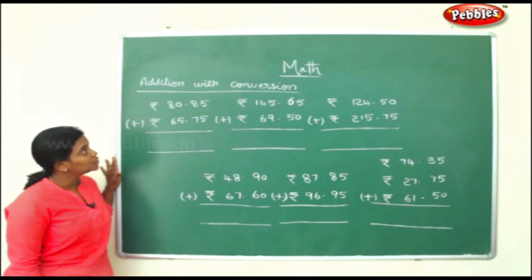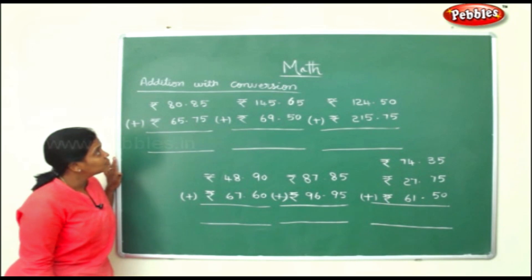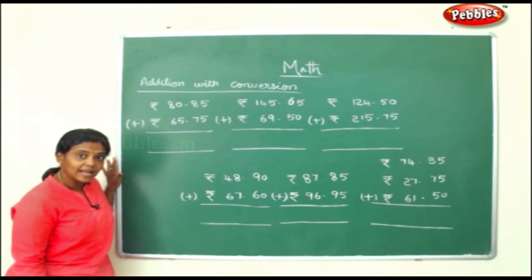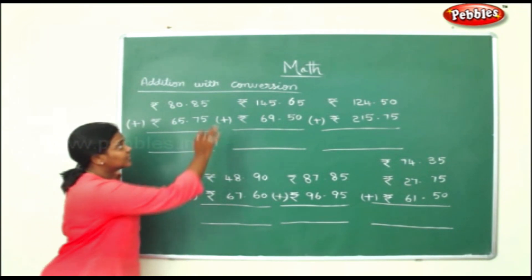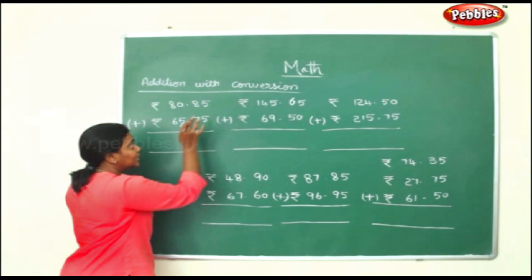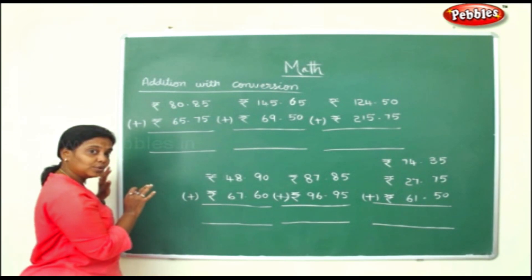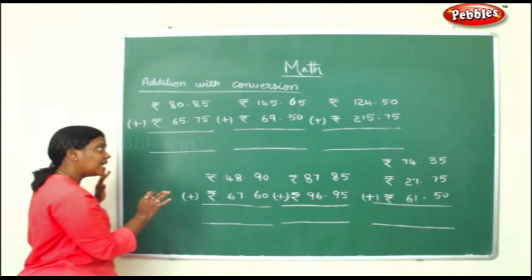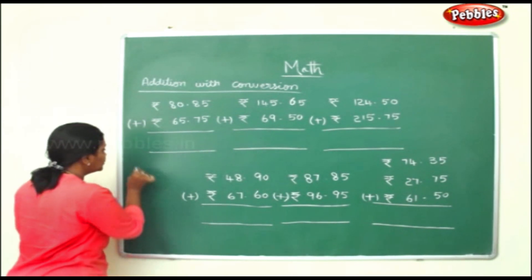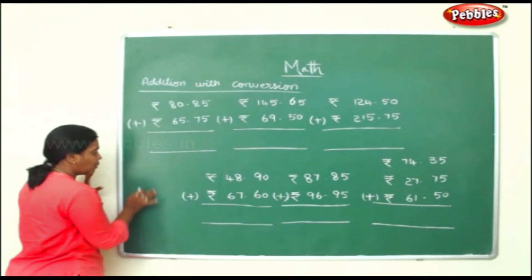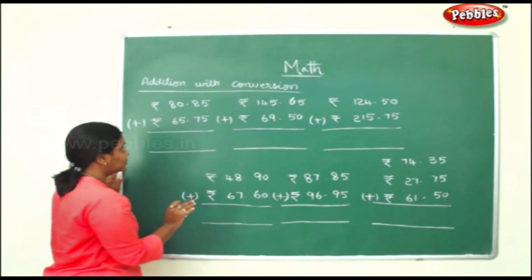Now we shall see addition with conversion. Addition with conversion is nothing but simple addition — you do it the same way you add up. Since we have given it conversion, I will just take one sum, convert it and show it to you. You will get the same answer. So you don't have to confuse yourself — it is just basic addition.